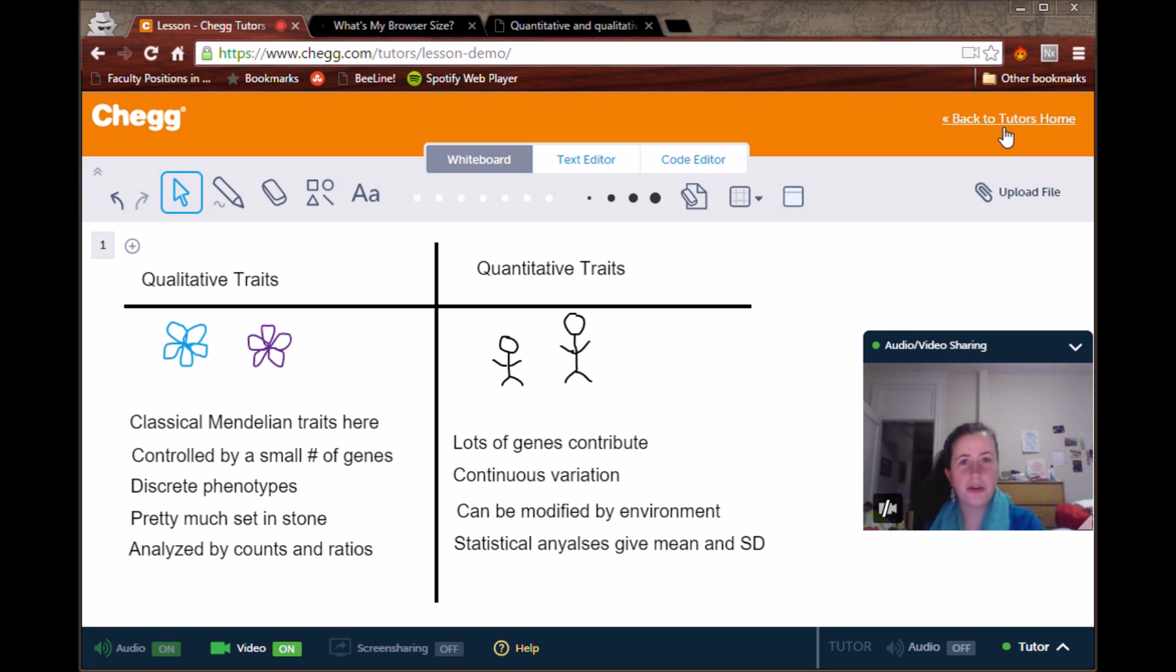Quantitative traits aren't like that. The environment can make a big difference on them. For example, if a person is born with the genes to be like 5'9", and then they don't get good nutrition as a kid, they may be significantly shorter than that. Or if they get very good nutrition and maybe play sports and practice good posture and all these different things, they might end up being a little bit taller than that. So it is dependent on the environment.